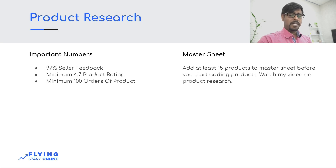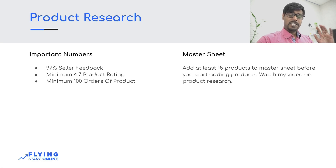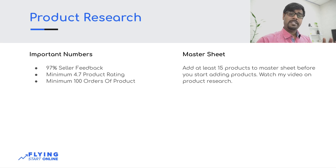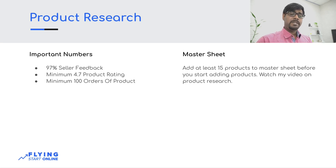When you make a master sheet, keep 15 products on it which you will add to your store. Until you don't have a sheet of 15 products, you will not start adding products. I will show you a demo because I have not yet chosen 15 products, but I want to show you step by step how to add products. When you do it, spend good time on product research, choose 15 products, put them on the master sheet, and then start adding products following the whole process of this video.